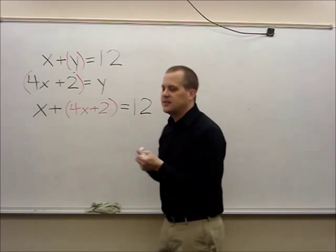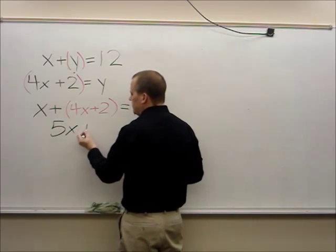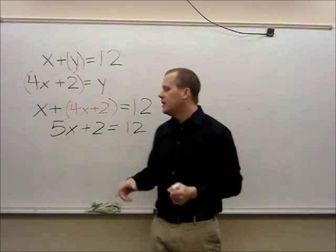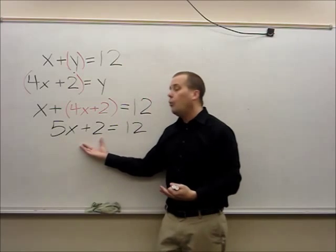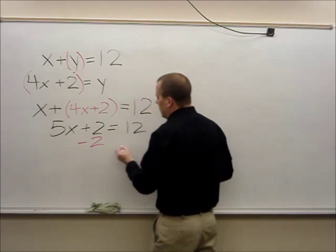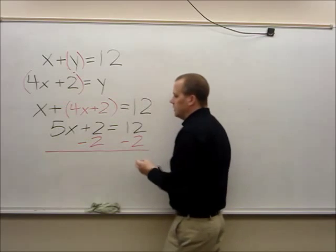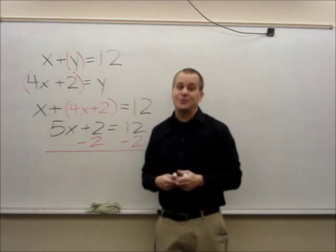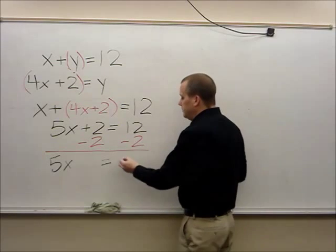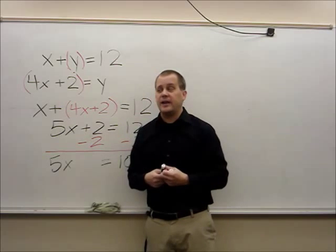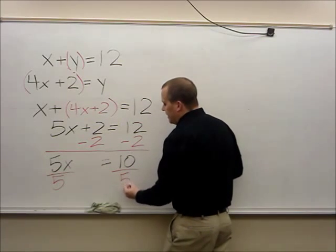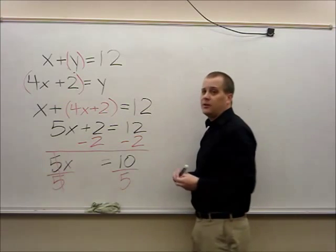Now I need to combine like terms — I add all my x's together: x plus 4x is 5x. The 2 doesn't change, and equals 12 doesn't change either. I've got 5x, and after it a positive 2, so I subtract 2 from both sides of the equation. Whatever I do to the left side I must do to the right side. Now I'm left with 5x equals 10. There's a 5 in front of x, so I divide both sides by 5. Those cancel out, and 10 divided by 5 is 2.